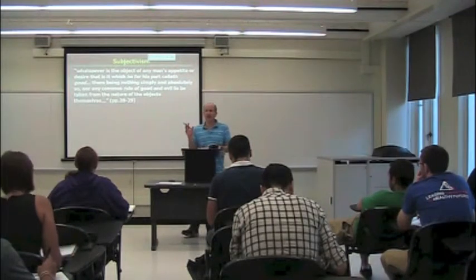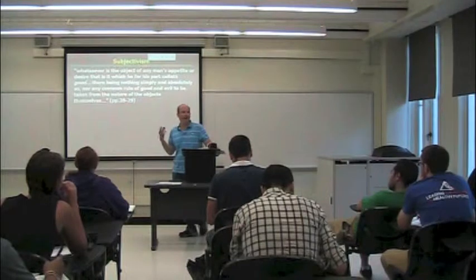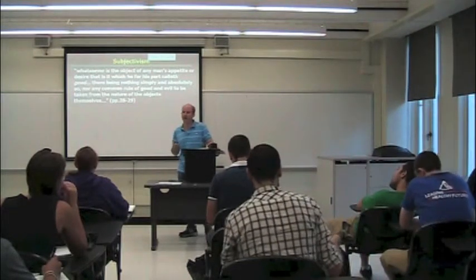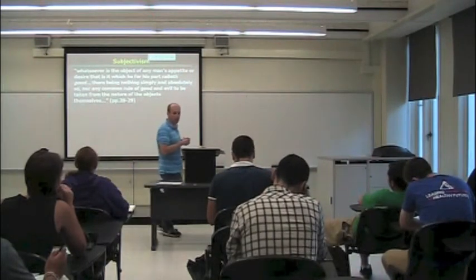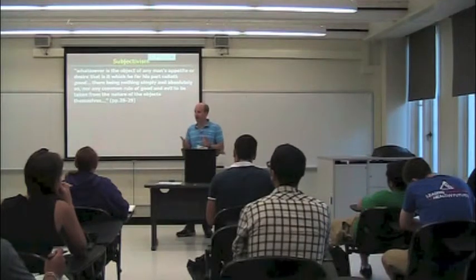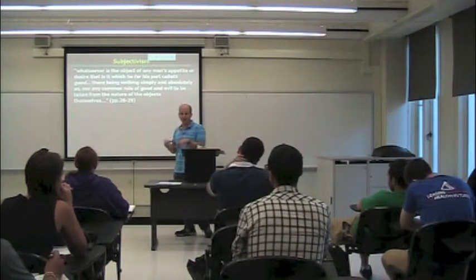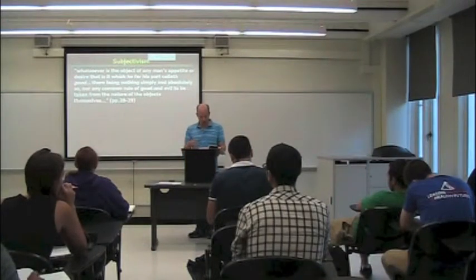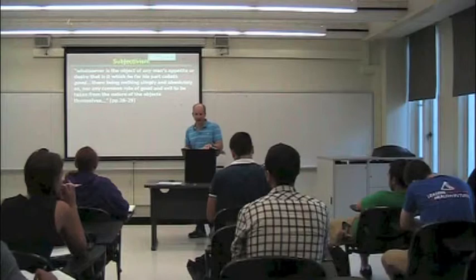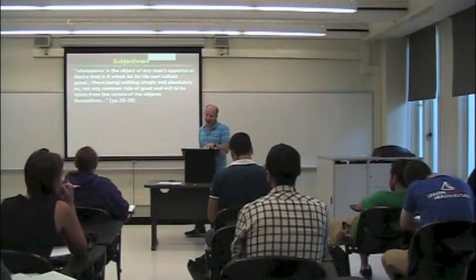Hobbes' point is, there's nothing that is simply good or simply bad, absolutely good or absolutely bad. When we use these words, when we use these words to describe something as good or bad, what we're doing is simply saying I have a desire for the thing, or I have an aversion for the thing.